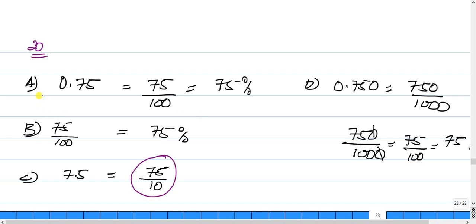So let's look at option A. Option A, 0.75 as a common fraction would be, changing the decimal to a common fraction, that would be 75 over 100. 75 over 100 is 75%, 75 parts out of the 100.